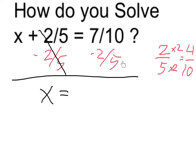On the right, when I subtract, 2 fifths is actually equal to 4 tenths. If I multiply top and bottom by 2, I get 4 tenths.